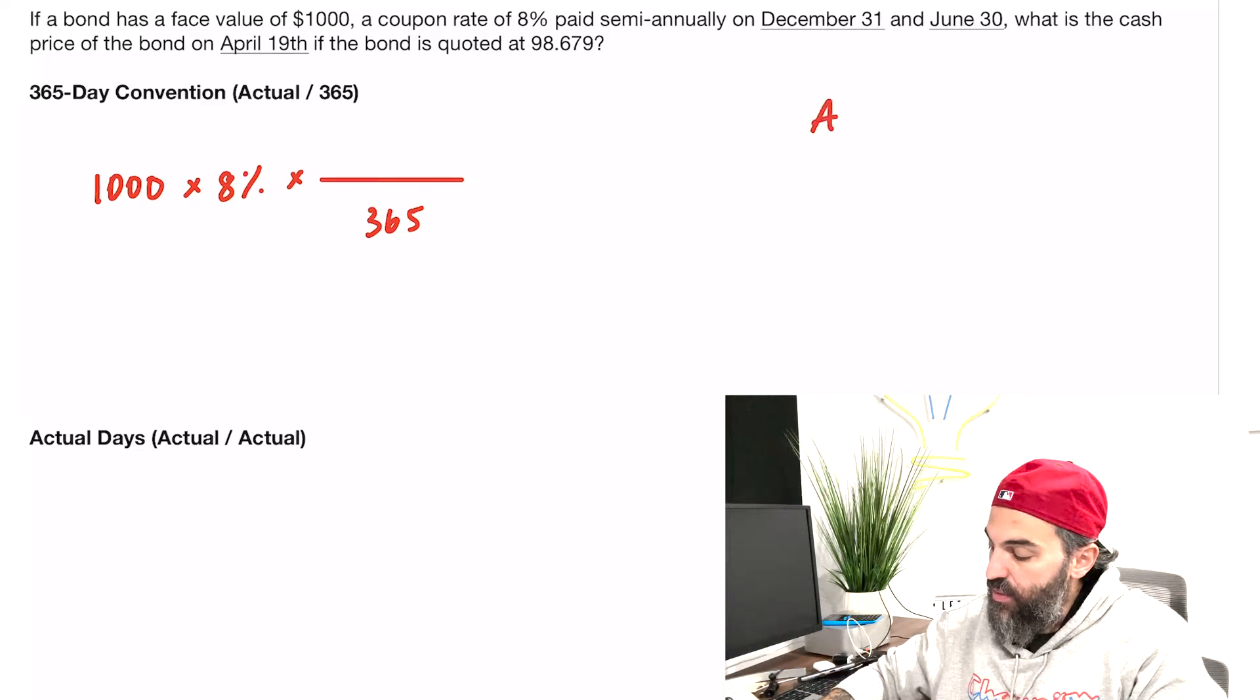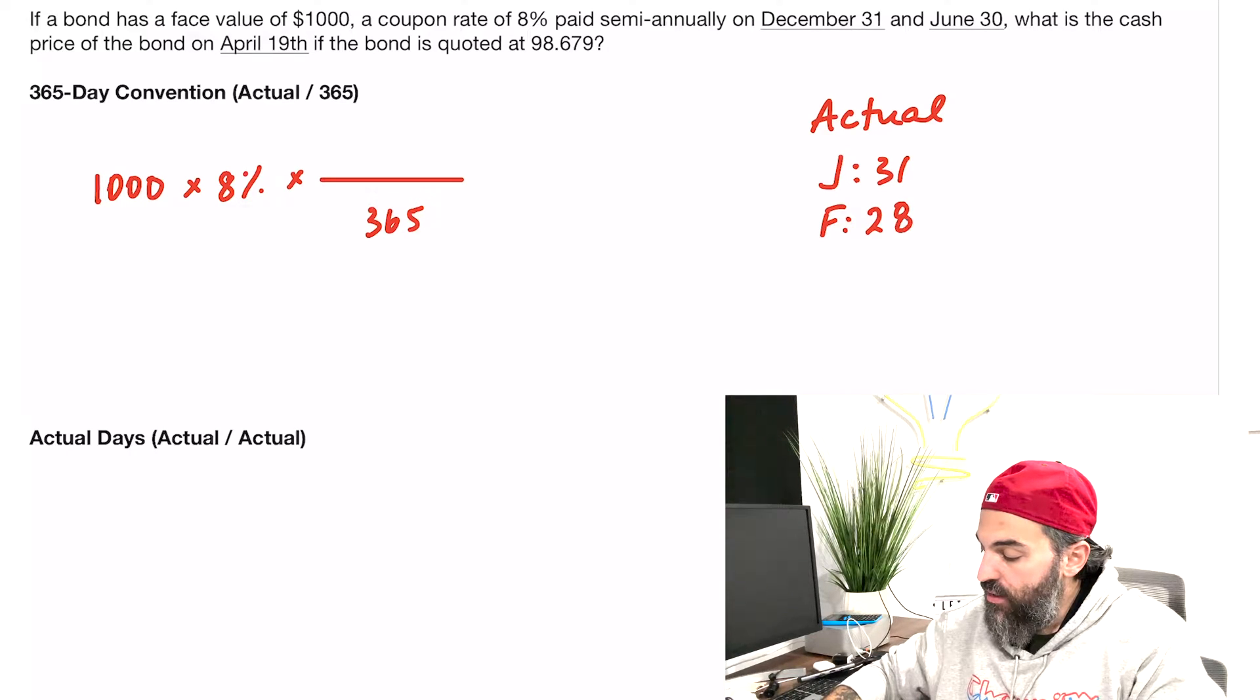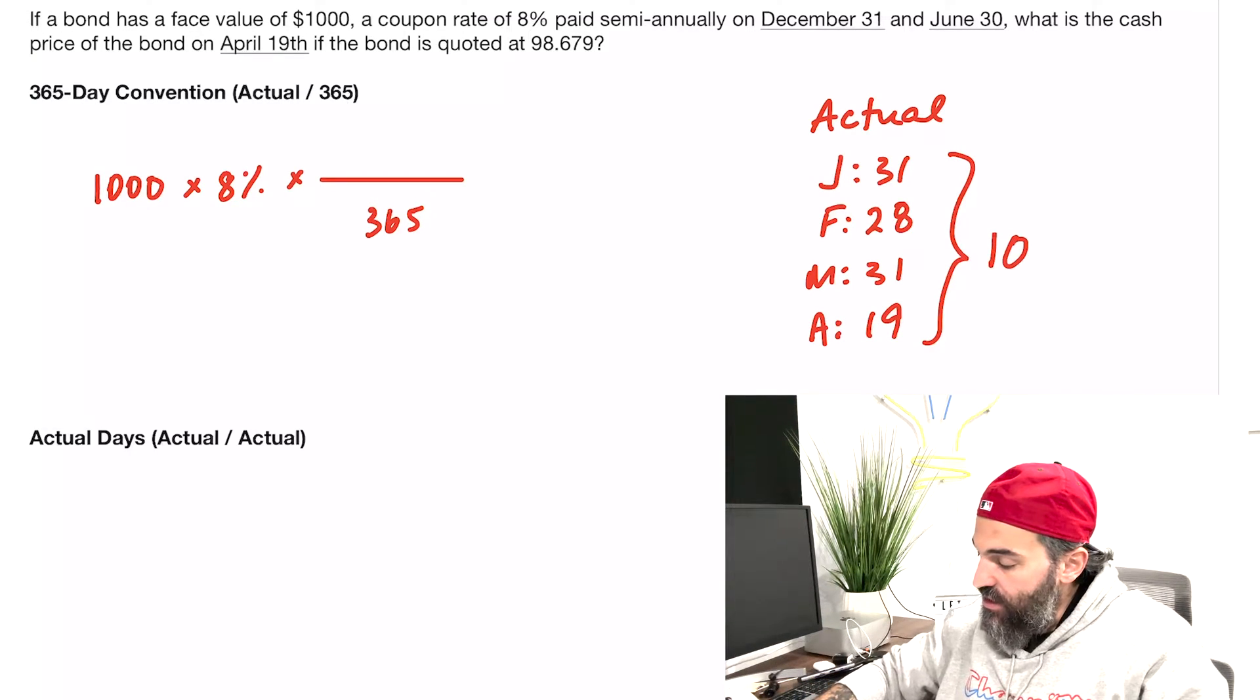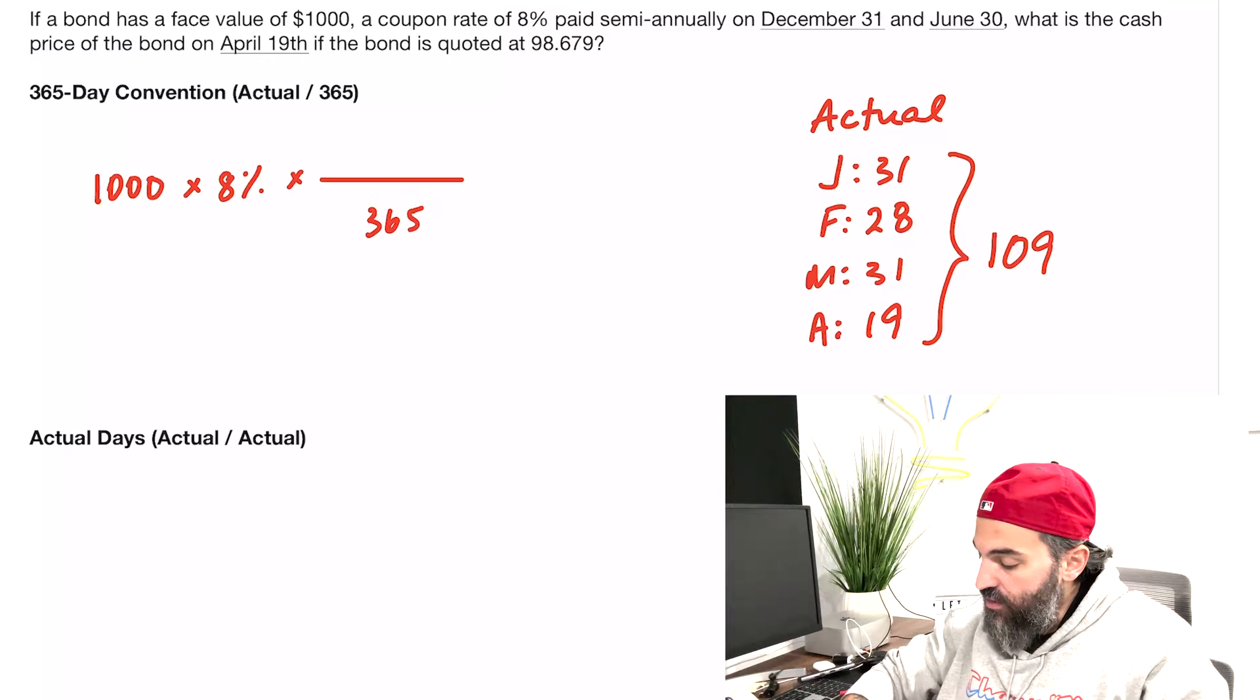Since today is April 19th and the previous payment would have been December 31st, that's 31 days for January, 28 for February, 31 for March, and 19 for April. That's 109 days since the last payment, so we'll do 109 over 365.